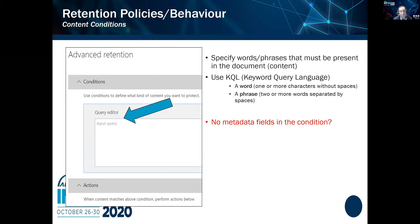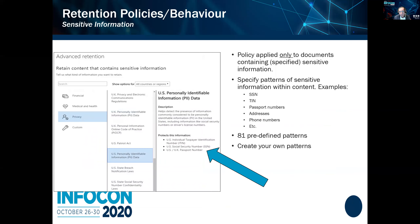Now let's look at policies. Remember: policies are assigned to places; labels are applied to things — documents or records. A retention policy gets applied to a place such as a library or a site in SharePoint. To specify which documents it affects, you type in a query — documents matching that query have the policy applied. It's designed for sensitive information such as social insurance numbers. There are 81 predefined patterns (e.g., U.S. taxpayer number, Canadian social insurance number), and you can create your own.